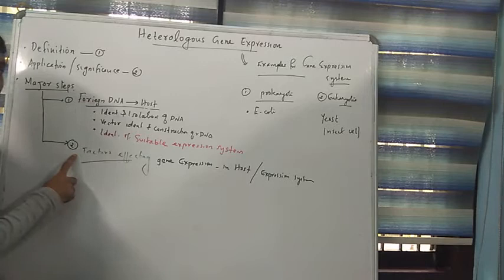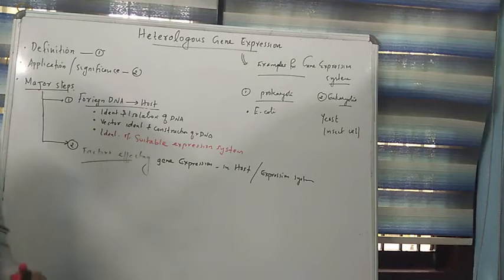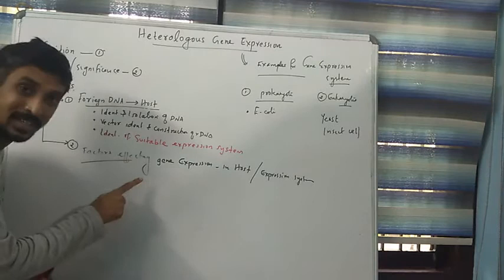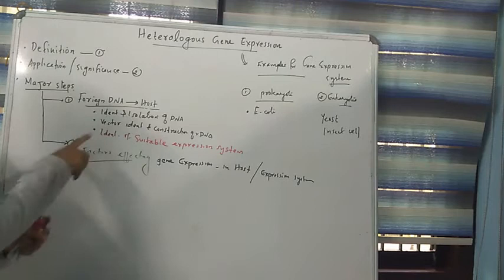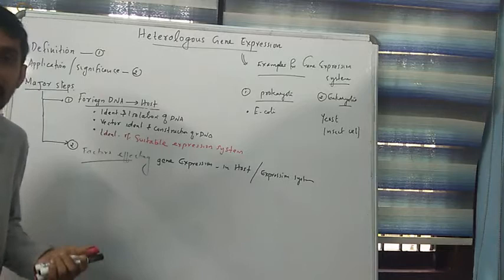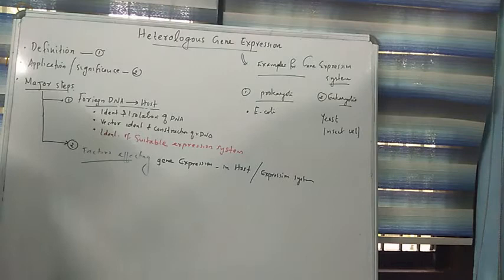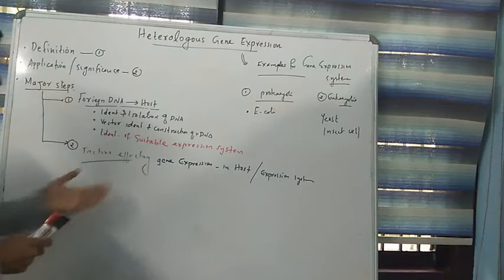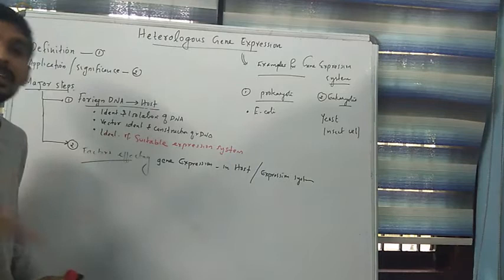The second major step is understanding what factors affect the expression of the foreign DNA inside the host cell or expression system. This is a broad topic because the factors affecting gene expression are of various kinds — initiation factors of transcription, elongation factors of transcription, termination factors of transcription, as well as initiation, elongation, and termination factors of translation.